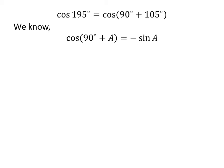We know the trigonometry identity: cosine of 90 degrees plus A is equal to minus sine of A. The proof of this identity is given in the video appearing in the upper right corner, and the link is also given in the description. So, cosine of 195 degrees is equal to minus sine of 105 degrees.